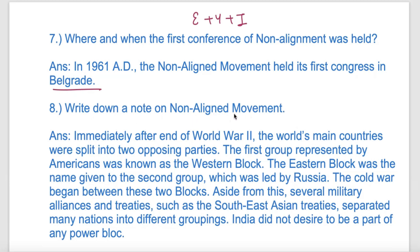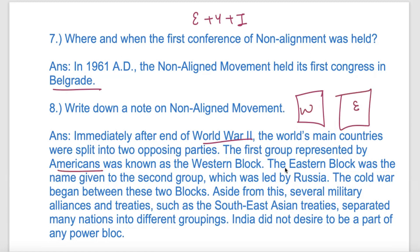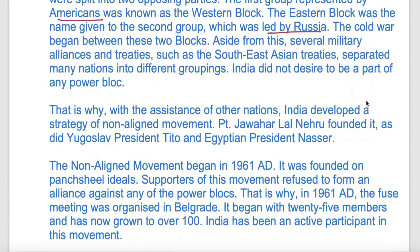Write a note on the Non-Aligned Movement. After World War Two, the world was divided into two blocs - countries under the Soviet bloc and those supporting the Western bloc. Many countries had signed military alliances and treaties, such as the Southeast Asian Treaty. India said it did not want to align with any bloc or group, which is why India supported the Non-Aligned Movement.